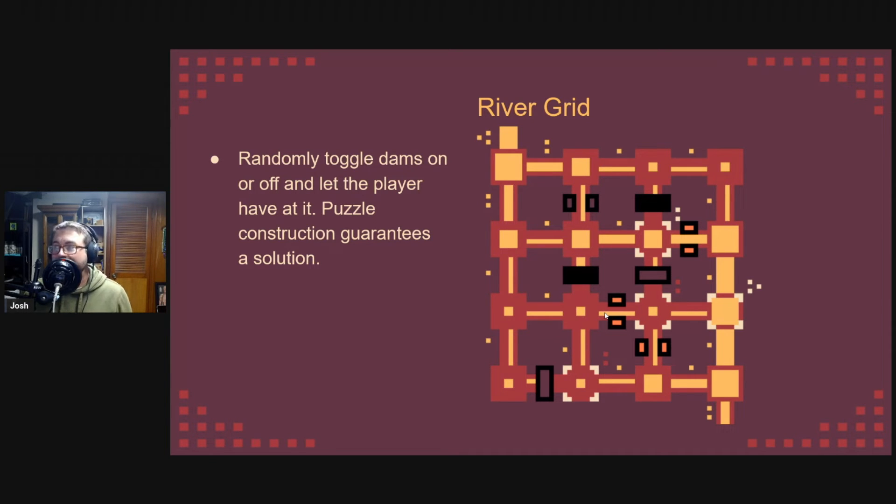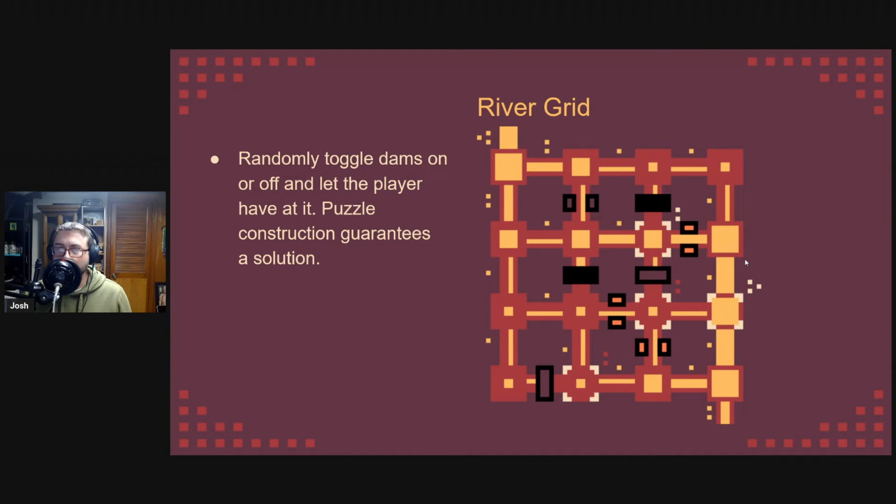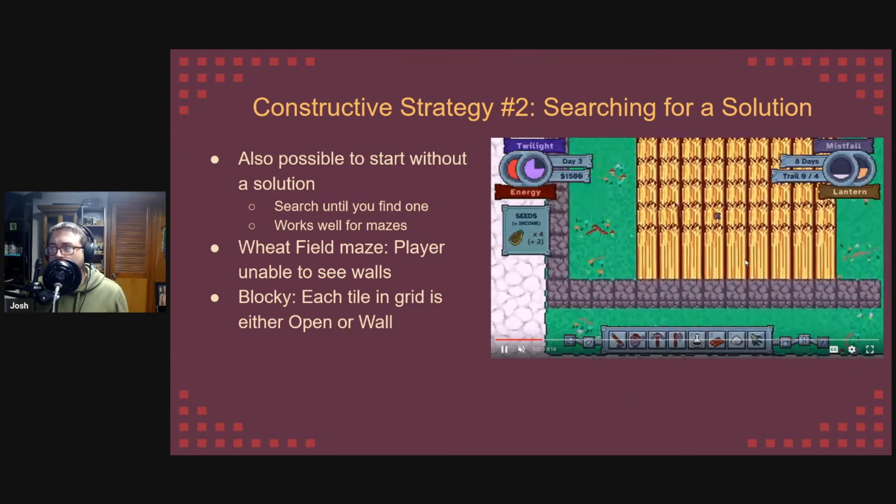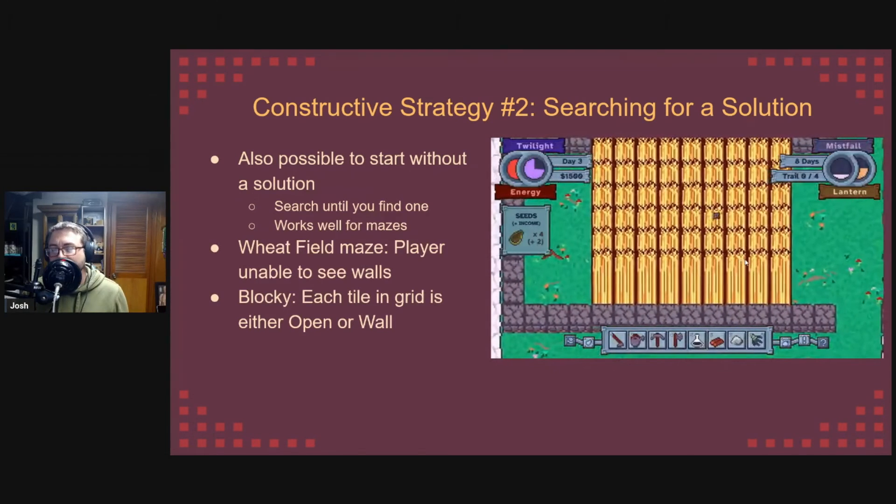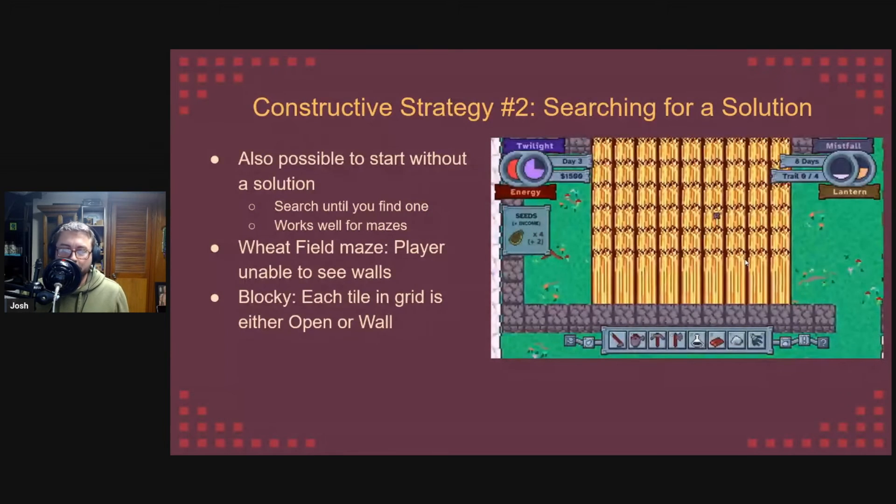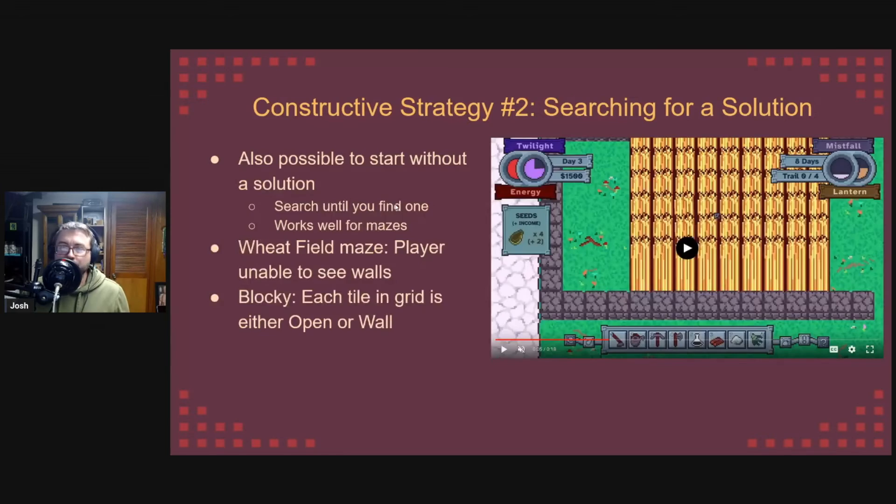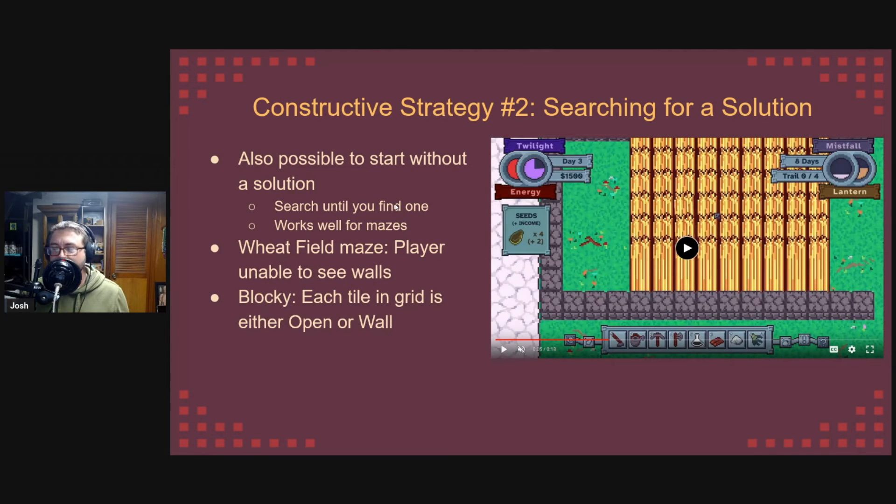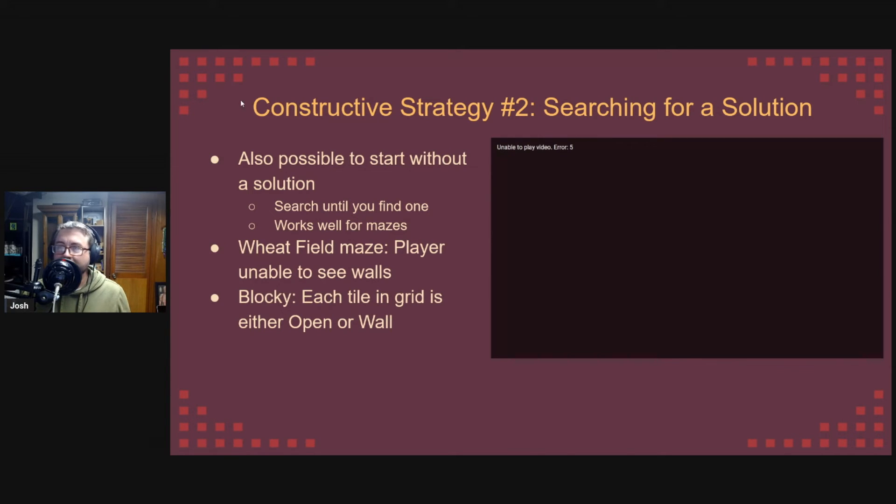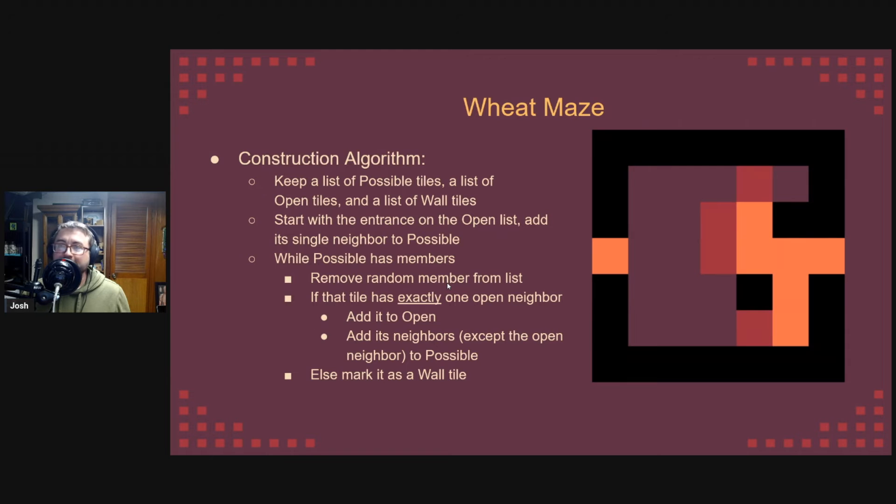So with constructive strategies, it's easiest to have something like the previous one and then you search until you find one. This works great for mazes because of the way they get built. In this video, you see the wheat maze. Each tile of the maze is either passable or not. The tiles all look the same though, and the player isn't easily able to see their location.